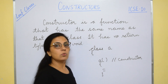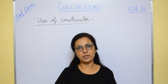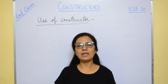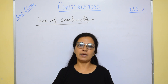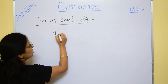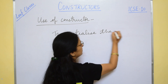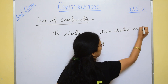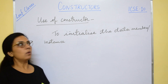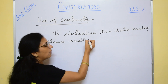Now, what is the use of a constructor? The data members or instance variables are the properties of the object. When you want to initialize these data members, constructors are used. If we don't initialize the data members or instance variables, we may get garbage values. So initialization of these data members is a must. The primary work of a constructor is to initialize the instance variables, which are the properties of the object.